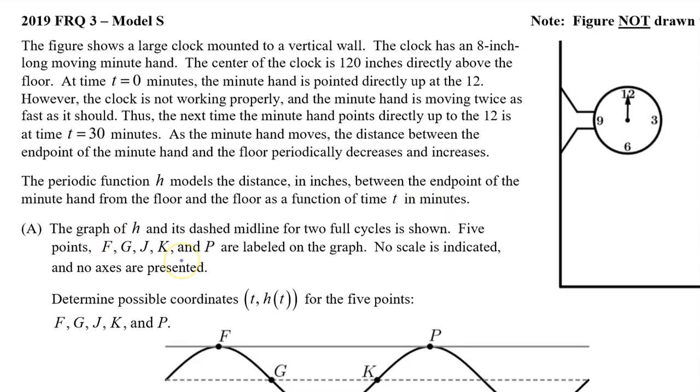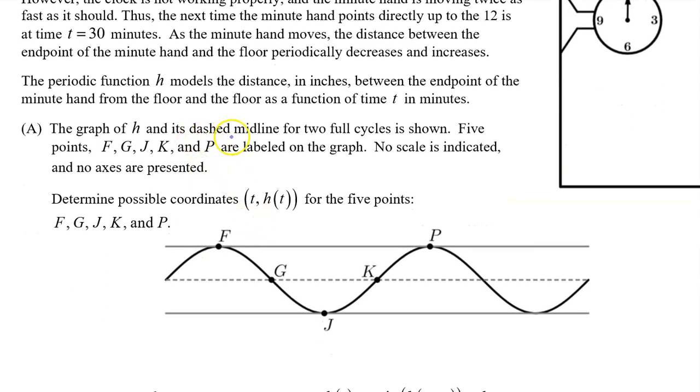Part A. The graph of h and its dashed midline for two full cycles is shown. Five points F, G, J, K, and P are labeled on the graph. No scale is indicated and no axes are presented. Determine possible coordinates (t, h(t)) for the five points F, G, J, K, and P.